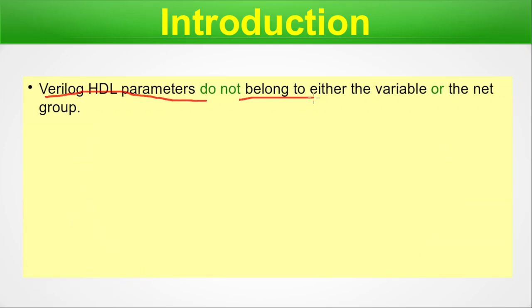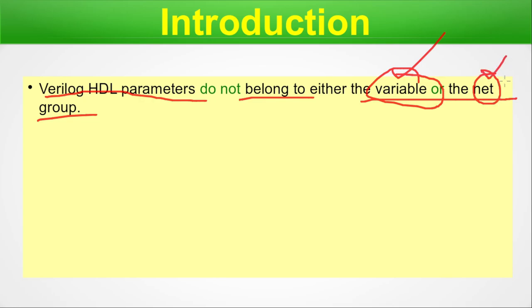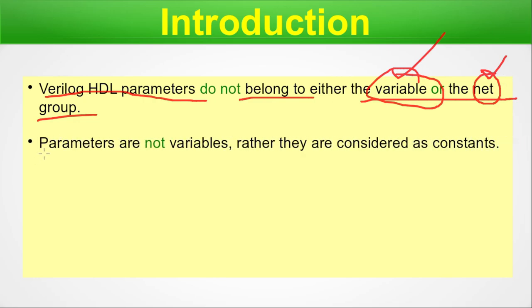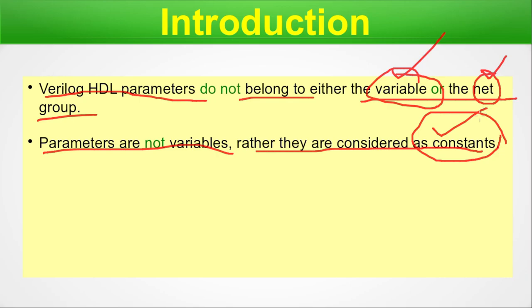Verilog HDL parameters do not belong to either the variable or net group. There are integer, real, and similar variables, as well as nets, wires, and regs — we have already discussed them in previous episodes. Parameters are not variables; rather, they are considered constants. Parameters are constant because in the beginning we assign them a value and that value is used throughout — variables, by contrast, may change with different blocks of code or timing operations.